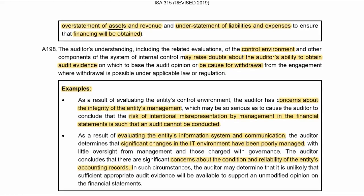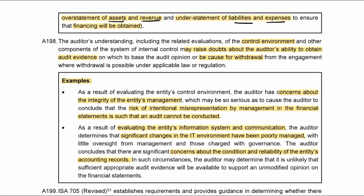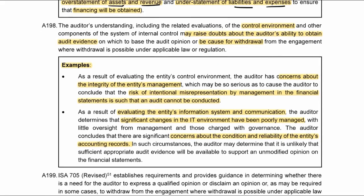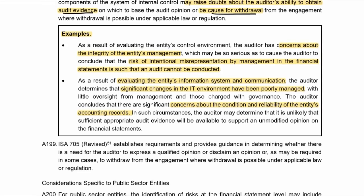How would fraud manifest? They would overstate assets and revenue, and understate liabilities and expenses. The auditor must understand the control environment because if it is weak, it may raise doubts about our ability to obtain evidence, and we might want to withdraw. Concerns about management integrity mean the risk that the financial statements may be misrepresented everywhere, such that the auditor cannot actually conduct an audit.